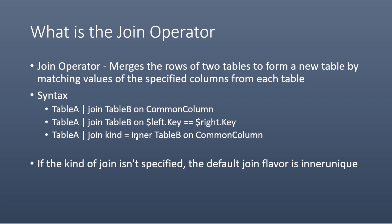For doing this in KQL, you first specify whatever table you want to output first, and that becomes known as your left table. Then you pipe that over to the join operator and specify the other table you want to compare against — that's your right table. Then you specify whatever column you want them to match on, assuming both table A and table B have a column with the same name.